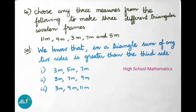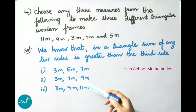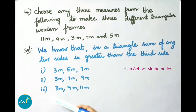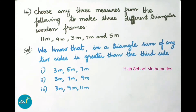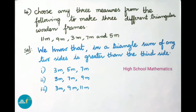We have taken three different sets of measures. First: 3 meters, 5 meters, and 7 meters. Second: 3 meters, 7 meters, and 9 meters. Third: 3 meters, 9 meters, and 11 meters. In all three examples, the sum of any two sides is greater than the third side. These measurements can be used to make different triangular wooden frames.